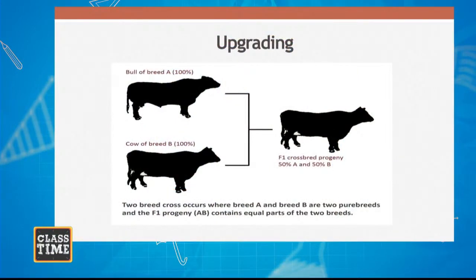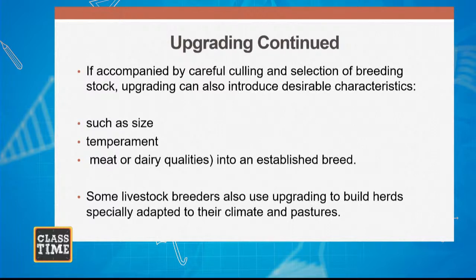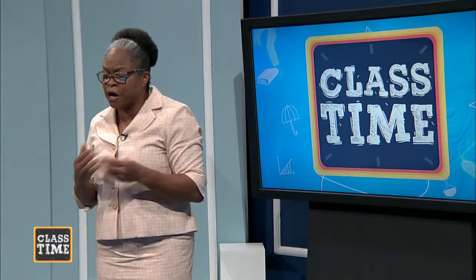Looking at the example: a bull of breed A at 100% pure crossed with a cow of breed B at 100% pure gives us from the F1 generation 50% of bull breed A and 50% of cow breed B. This animal will now contain equal parts of the two breeds, meaning we are upgrading our animal. Once we talk about upgrading, we are looking at the size of the animal, the temperament, and the quality of the meat. But we must accompany upgrading with careful culling — that means removing the undesirable animals from the breeding stock.